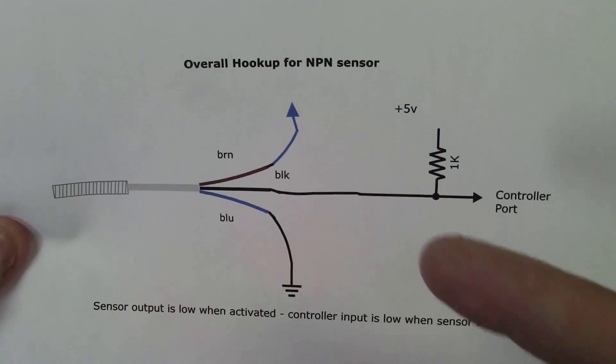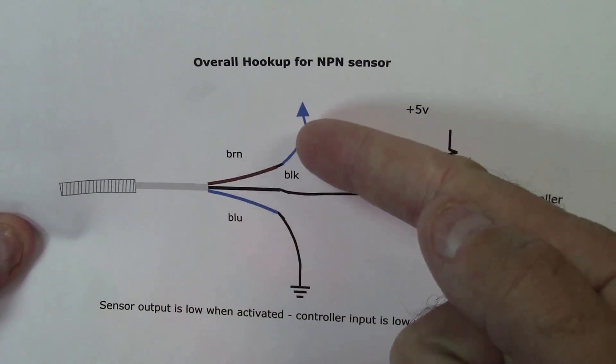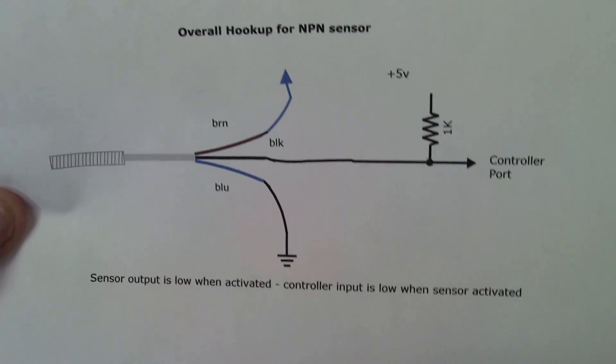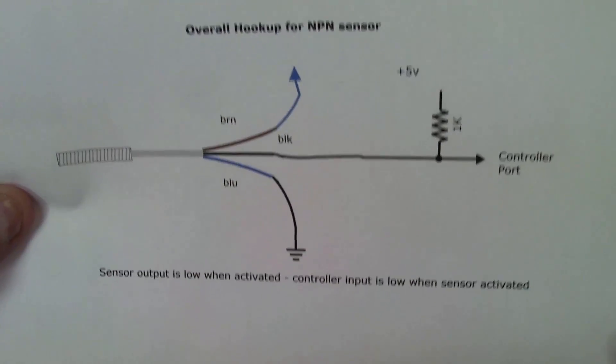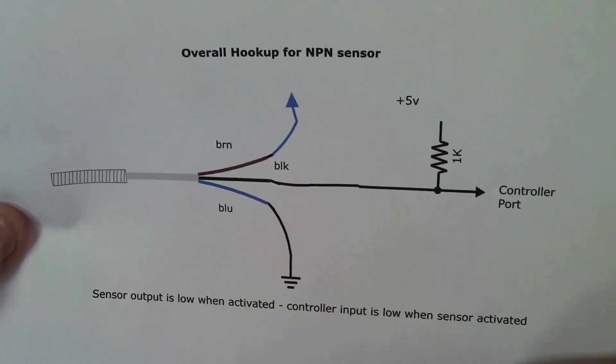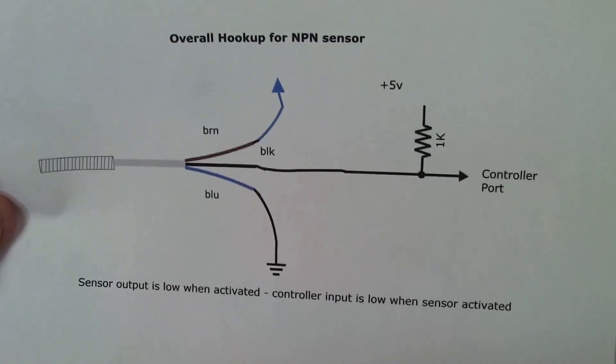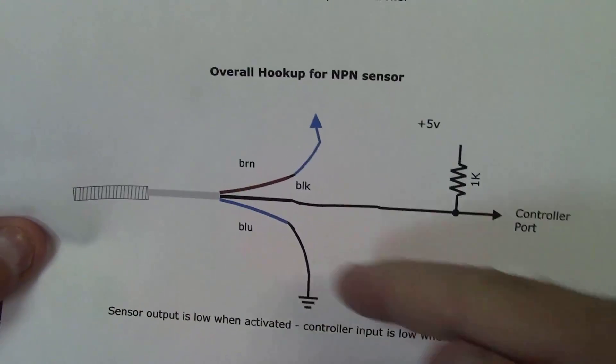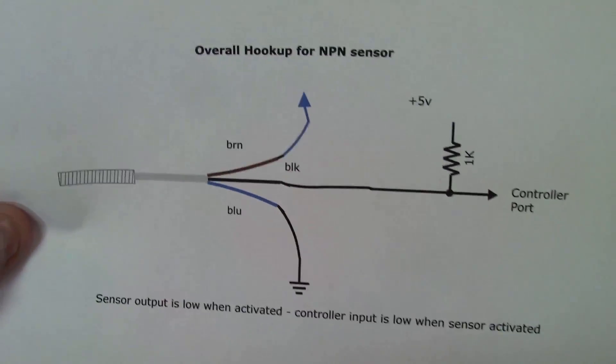9 volts is good because we can use it to run both the sensor and power the Arduino through the VIN pin on the Arduino. So all we have to really do for the output terminal is hook it to a pull-up resistor to positive 5 volts on the Arduino and our blue of course goes to common.